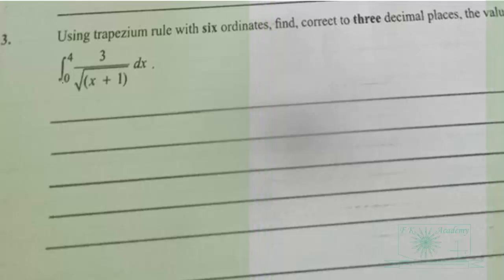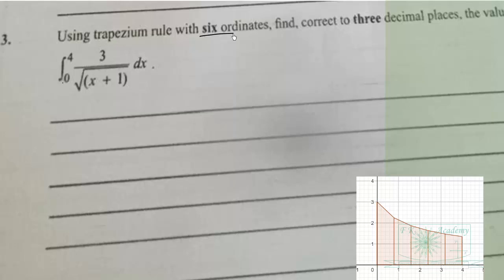So how do we do that? We need to form a table. What is the meaning of six ordinates? Six ordinates means you use five trapezia: one, two, three, four, five. The ordinates are one, two, three, four, five, six.